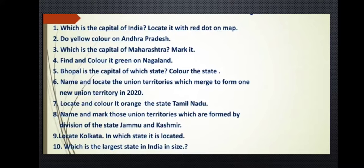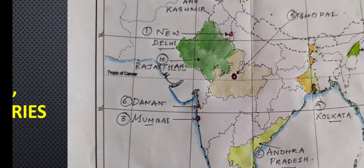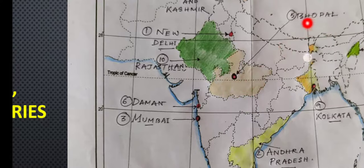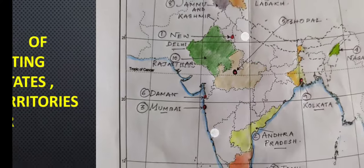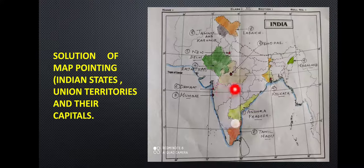The next question is: Bhopal is the capital of which state — and color the state. Bhopal is the capital of Madhya Pradesh. This is the state of Madhya Pradesh and I have marked Bhopal, number five. I have also colored the state. You can also write Madhya Pradesh alongside. So Bhopal is the capital of Madhya Pradesh.